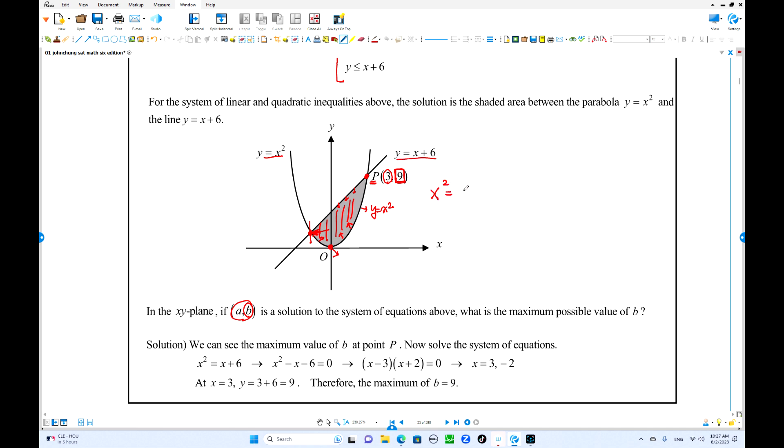So x squared equals x plus 6. So x squared minus x minus 6 equals 0, that is the factor. So x minus 3 and x plus 2 equals 0. So we have two value of x, 3 and negative 2. This one is negative 2, the smaller one, and the big one over here, x equals 3.